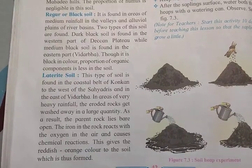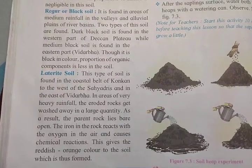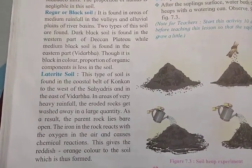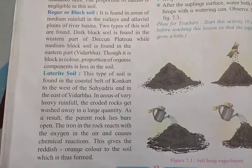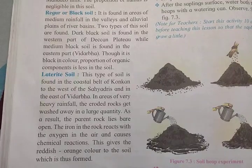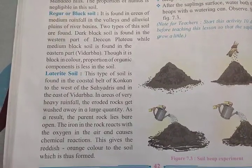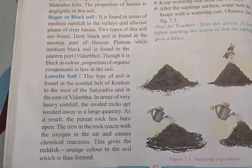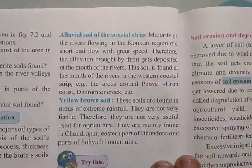In areas of very heavy rainfall, eroded rocks get washed away in large quantities. As a result, the parent rock lies bare. The iron in the rock reacts with oxygen in the air and causes a chemical reaction. This gives the soil a reddish-orange color. The metal reacts with oxygen and forms laterite soil, which is the soil of the coastal strip.